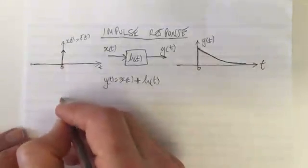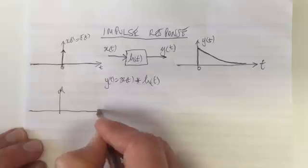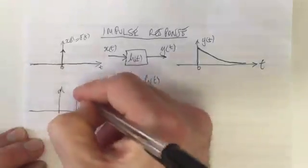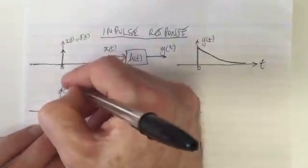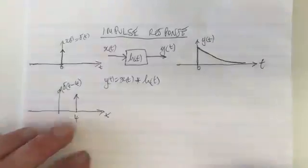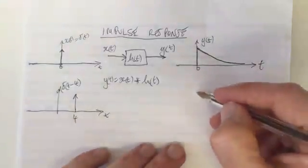So let's look at if we put an impulse at a different time. Let's say we had an impulse, our delta function was at a different time, let's say 4 for example, time equals 4, then what would you expect would happen?